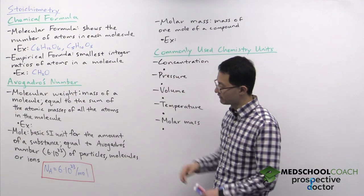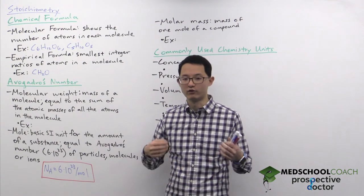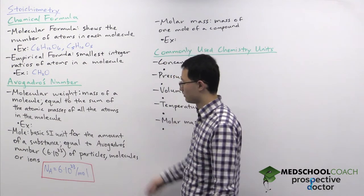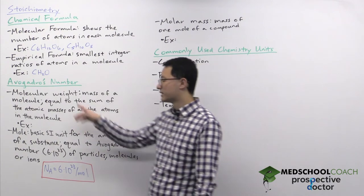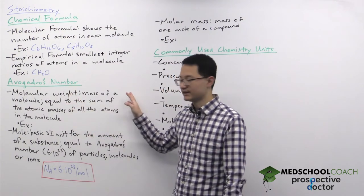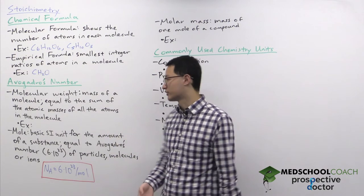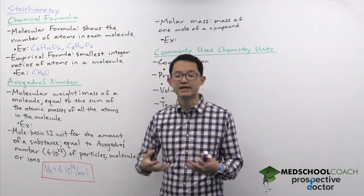Okay, so next thing I want to talk about is Avogadro's number. Avogadro's number is important for looking at the number of molecules. So where it becomes important is looking at weight and mass. So first of all, the molecular weight. This is simply the mass of a molecule and you can calculate the mass of a molecule by adding up the atomic masses of all the atoms that make up the molecule.